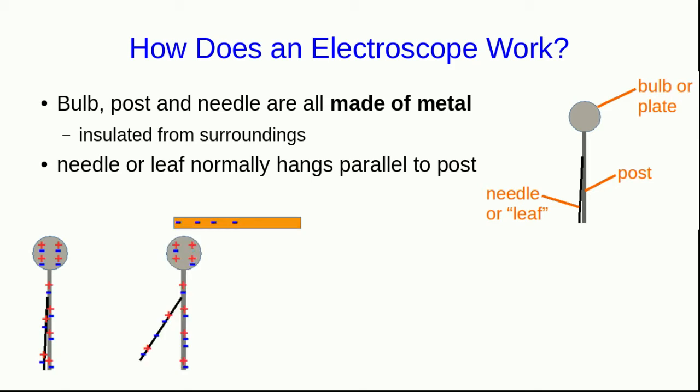But, when we place a negative charge, like the plastic rod that I just demonstrated with, near the bulb of the electroscope, because the electroscope is metal, the electrons in it are mobile. And so, the electrons are pushed downward in the electroscope. This leaves the bulb positive, and the post and needle are now negative. And because the post and needle are both negative, they repel each other. And so, the needle stands out from the post.